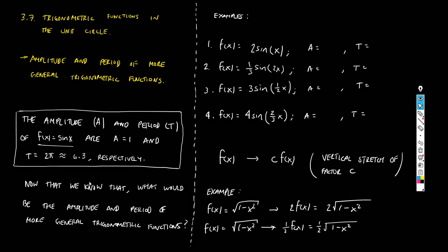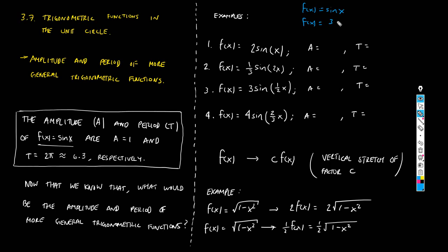Now that we know this, what would be the amplitude and the period of more general trigonometric functions? So far we have only talked about very simple trig functions like f(x) = sin(x), with nothing else multiplying x or the whole function. For example, what if I multiply by 3 — f(x) = 3·sin(x)? Or what if I multiply the input: f(x) = sin(2x)? These are more complex than the simple parent function.